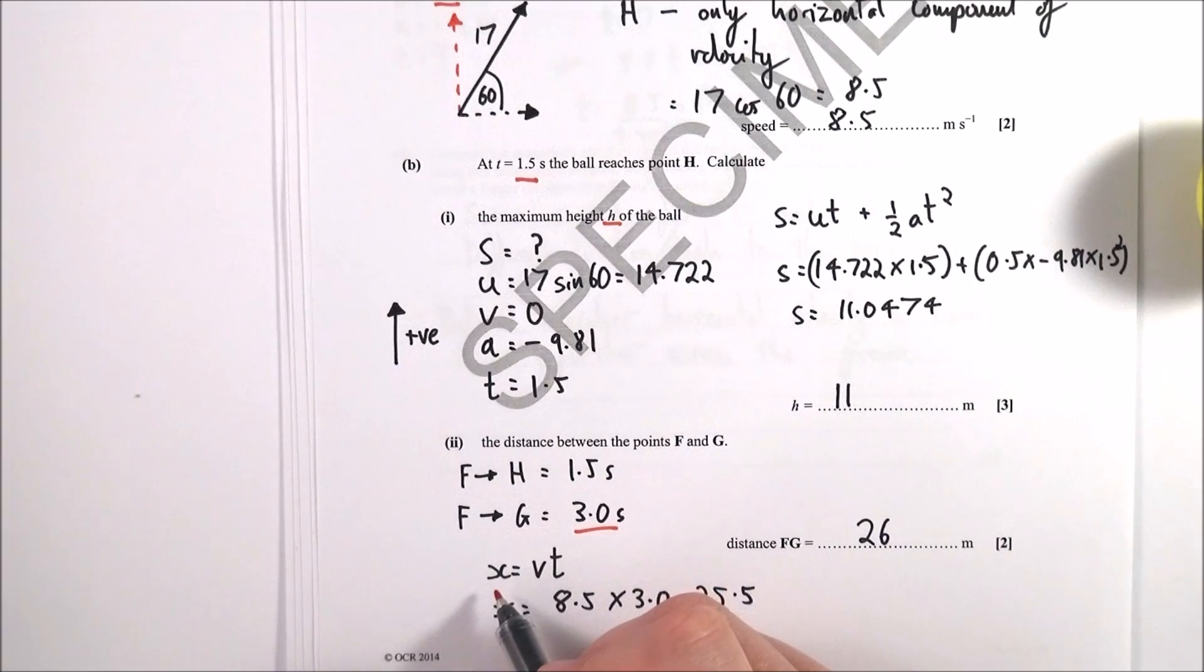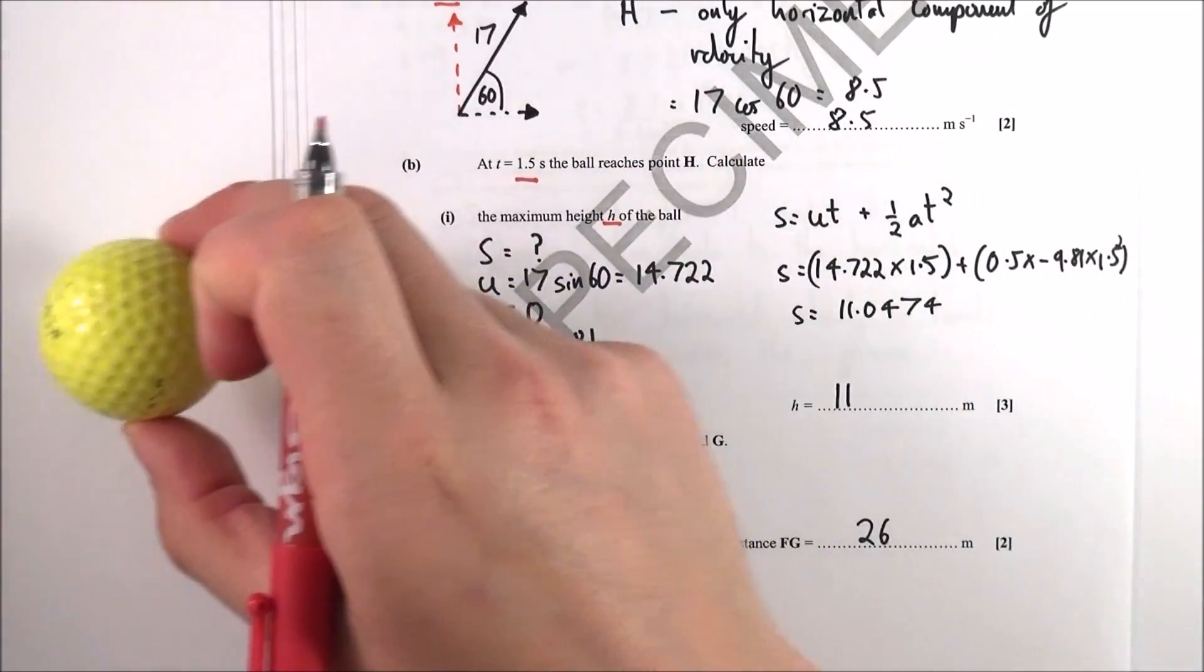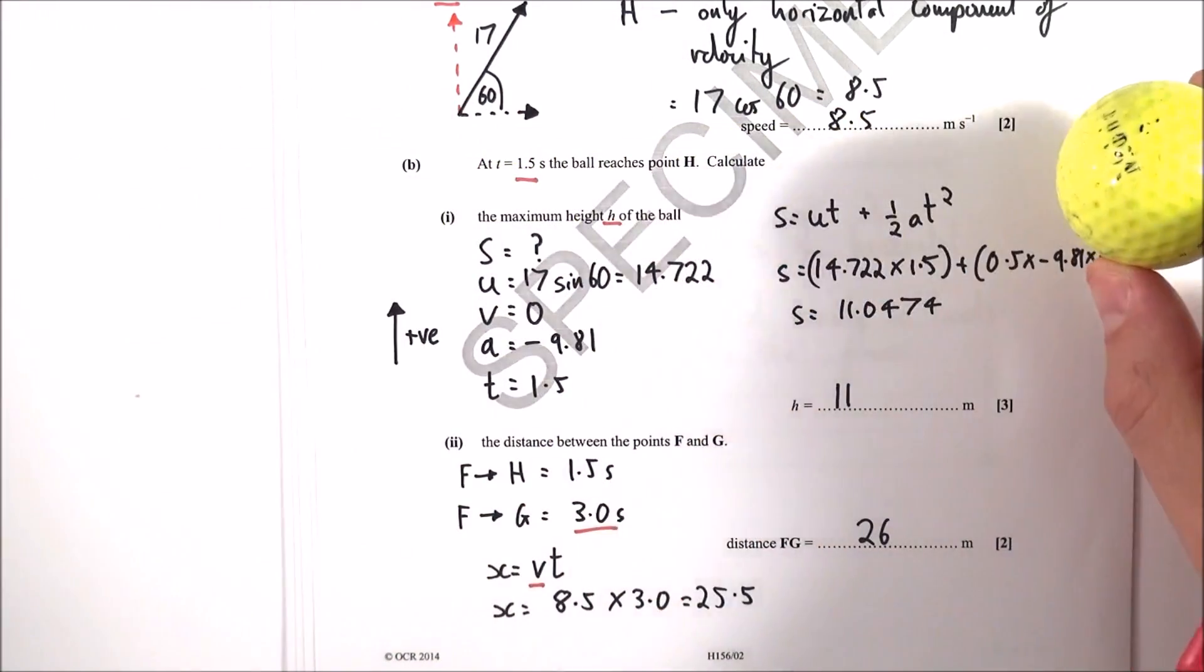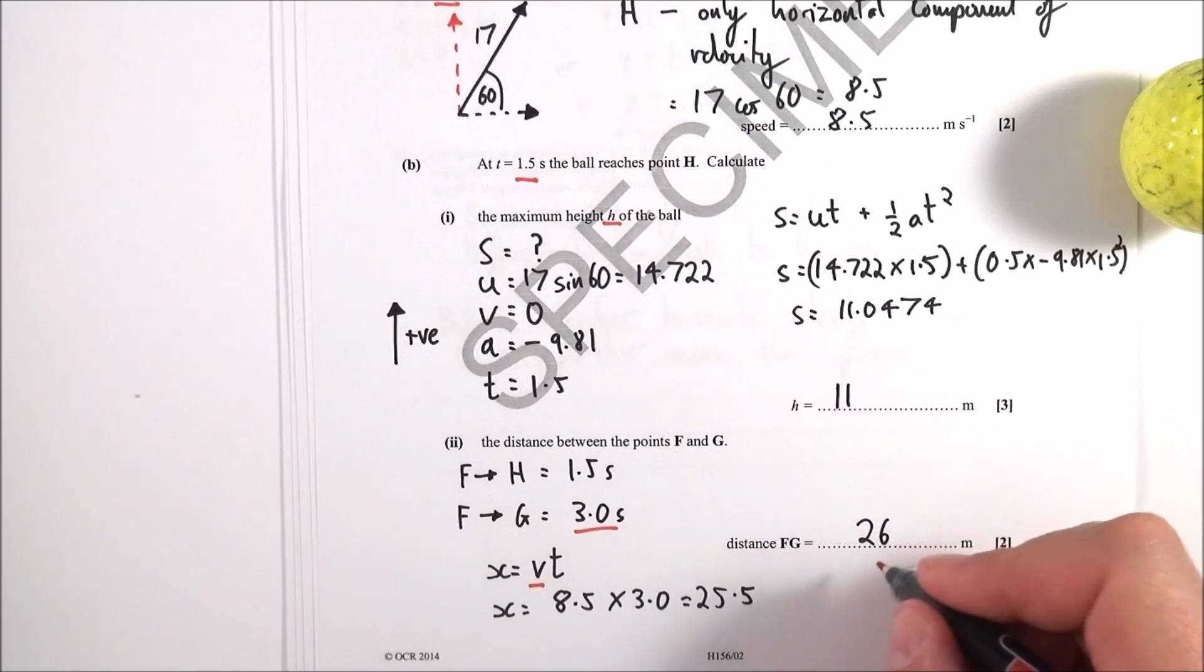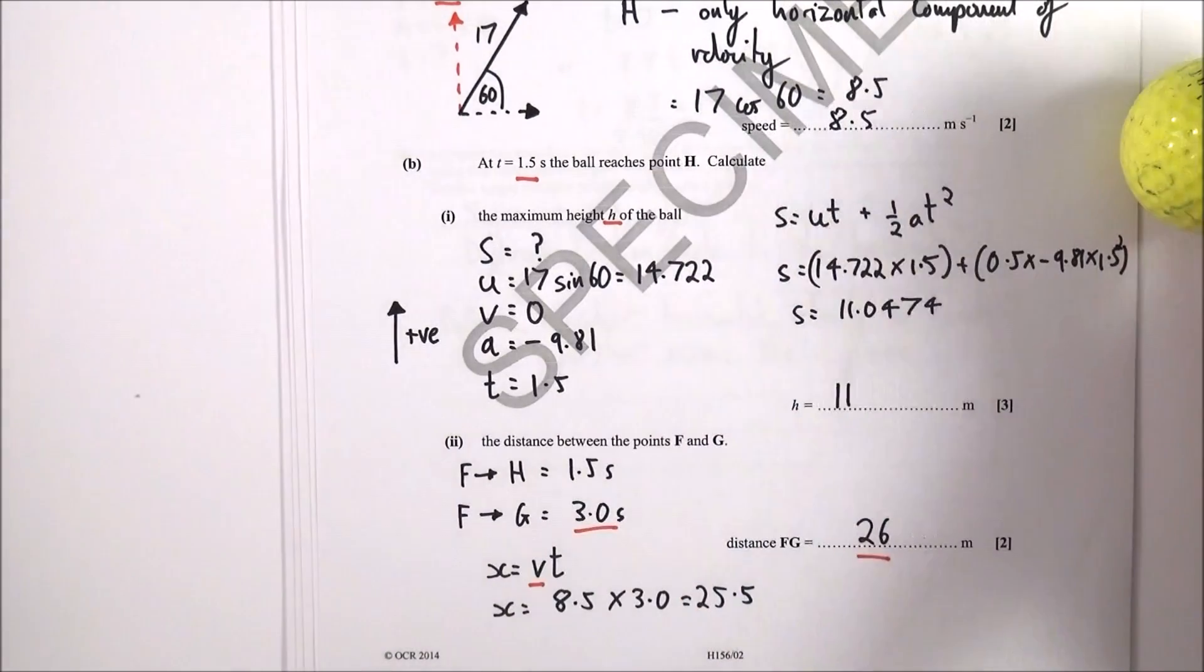I then know that because speed equals distance over time, the distance is equal to the velocity times time. And here I'm using my horizontal velocity because that doesn't change through the whole motion. So if we know how fast it goes and we know the time it takes, we can then work out the distance, which in this case is 25.5 meters, and again I've given that to two significant figures as 26 meters.